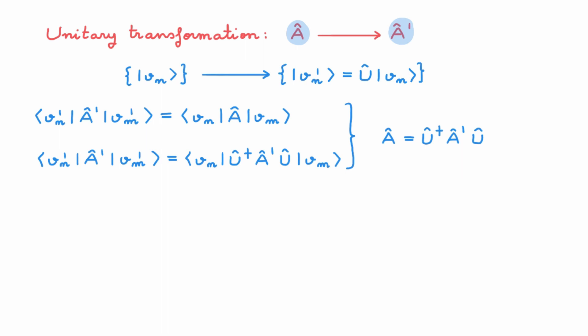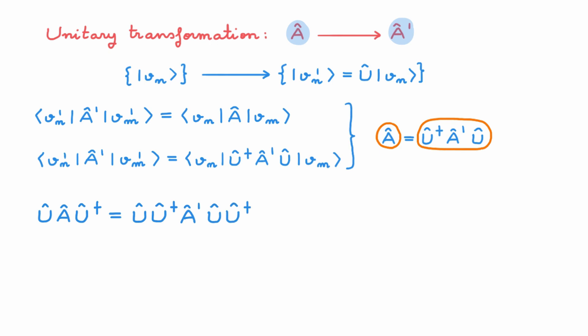Working with this equation, we multiply from the left by U and from the right by U†, and as U is unitary we have identities on both sides, giving us A' = UAU†. This is the key equation: when we build A' = UAU†, we say that A' is the unitary transformation of A. This may sound somewhat abstract at this point, but we encounter unitary transformations of operators very often in quantum mechanics, usually in the context of symmetry. You can find a simple example of this in the video on even and odd operators.